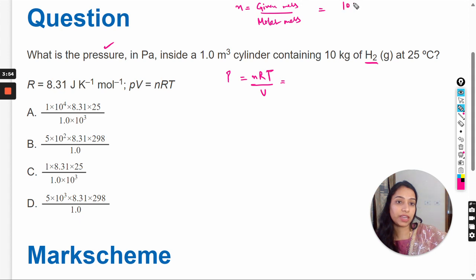So given mass is 10 kilogram and molar mass of hydrogen gas is 2 grams per mole. So we have to convert this kilogram into gram: 10 multiply 1000 divide by 2.